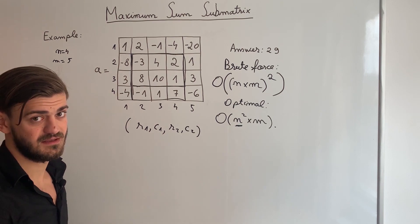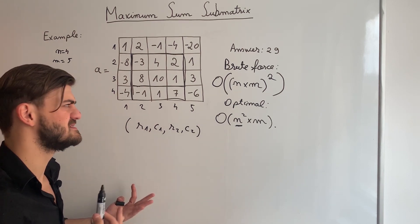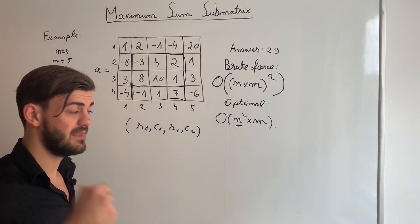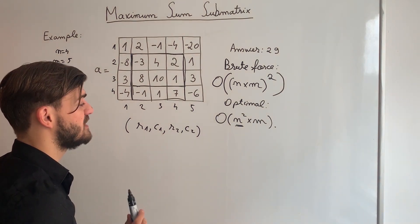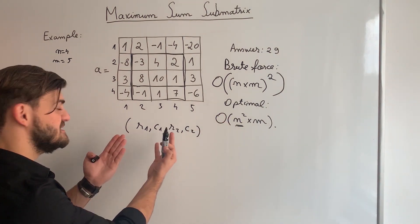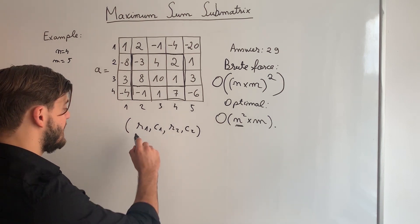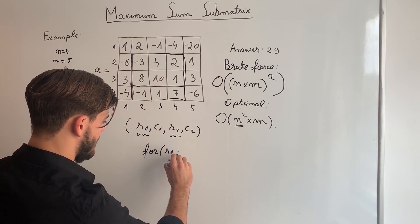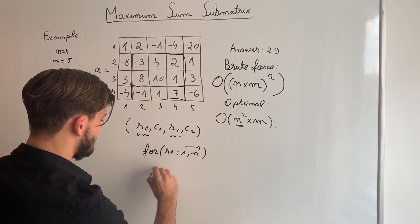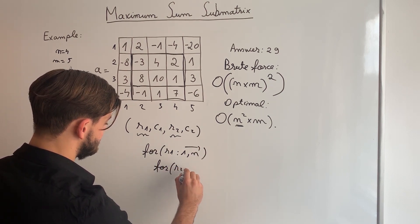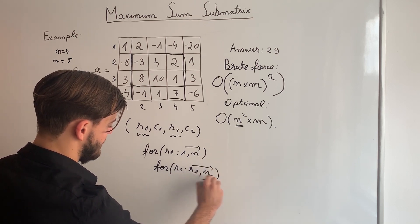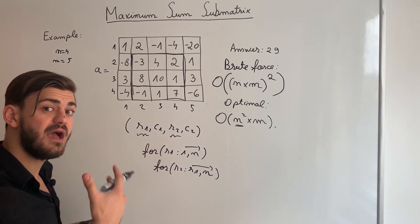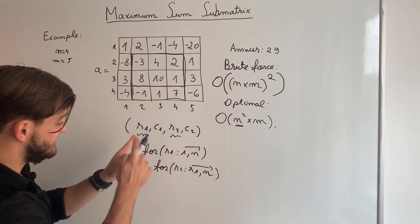I can fix R1 and R2. I make two nested for-loops: a for-loop for R1 from 1 to N, and another for-loop for R2 starting from R1 up to N. With these loops I know R1 and R2, and I have to find out what is the maximum sum sub-matrix with this R1 and this R2. For example, if at some step R1 equals 2 and R2 equals 4, I want to know the sub-matrix with its upper border in row 2 and its lower border in row 4.